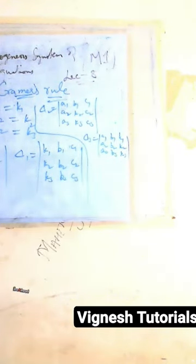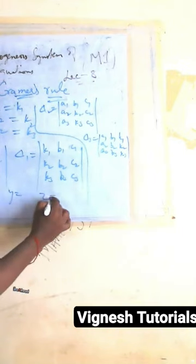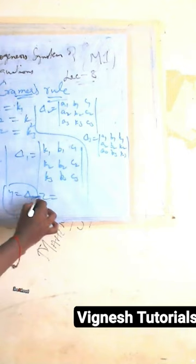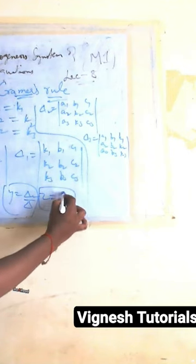So x equals, y equals, z equals - we will find the ratio of the determinants. Delta 1 by delta is the value of x. Delta 2 by delta is the value of y. And delta 3...